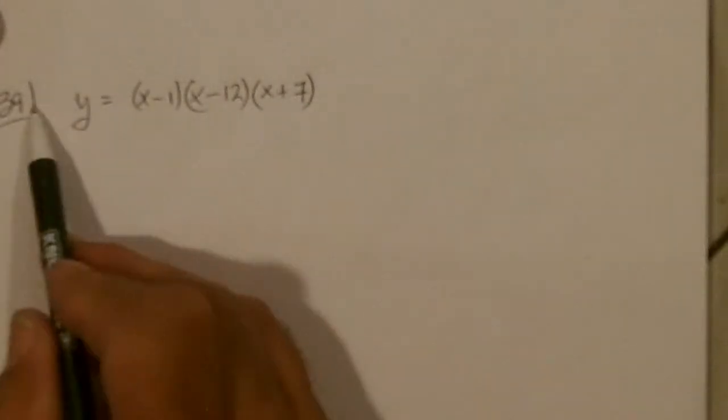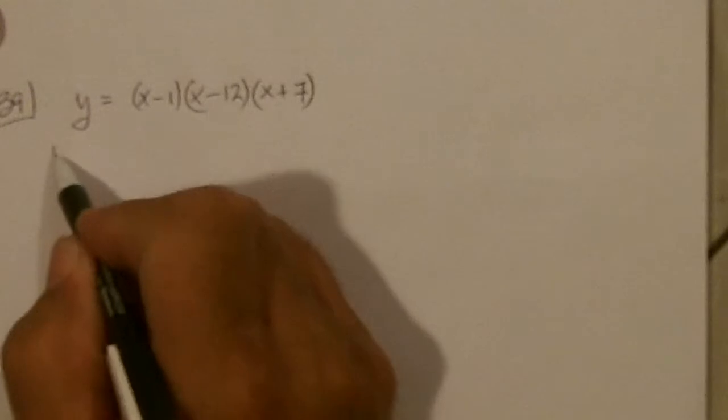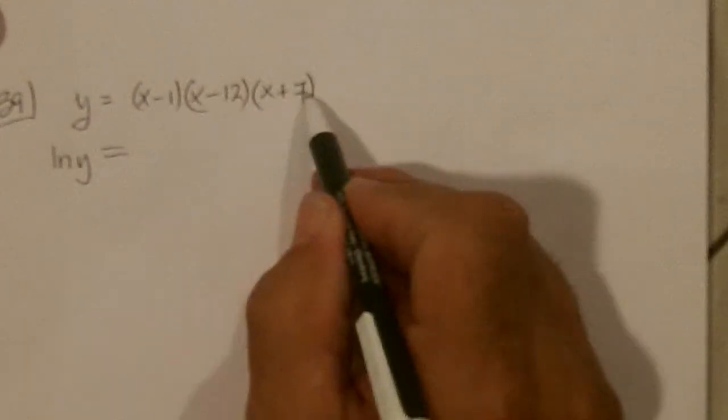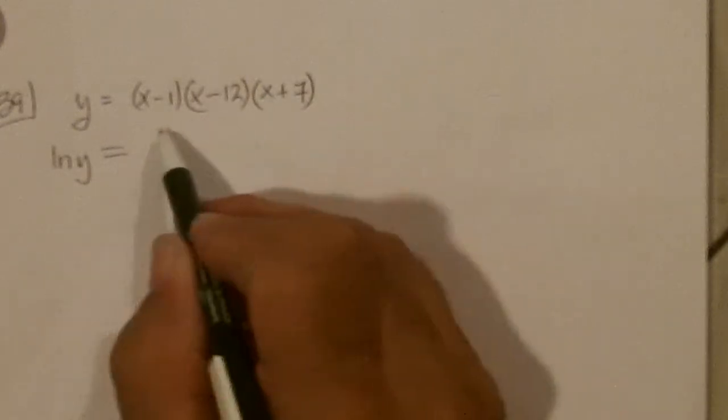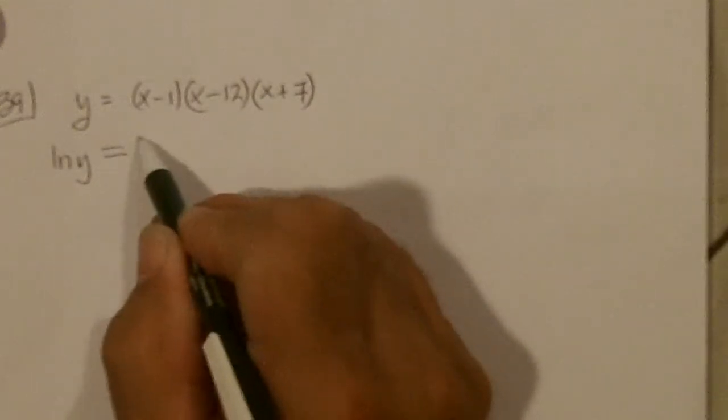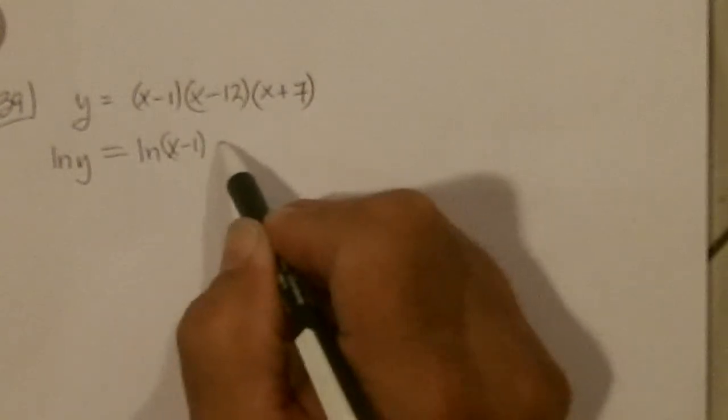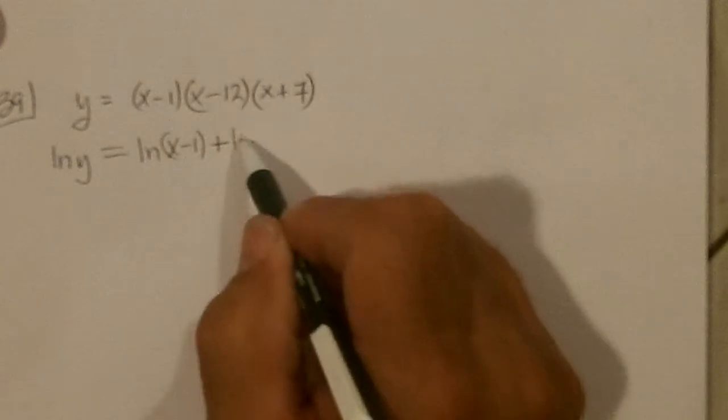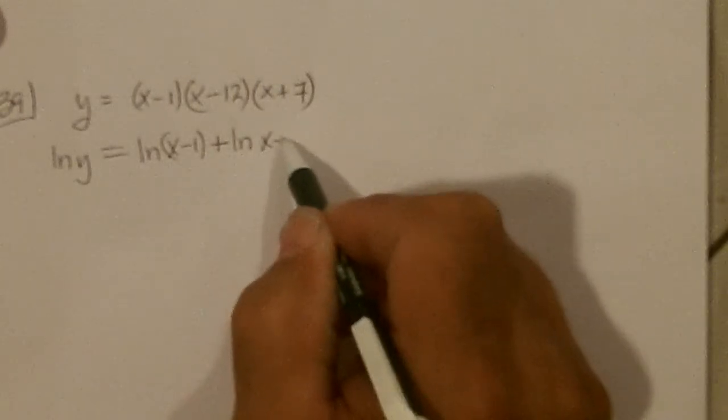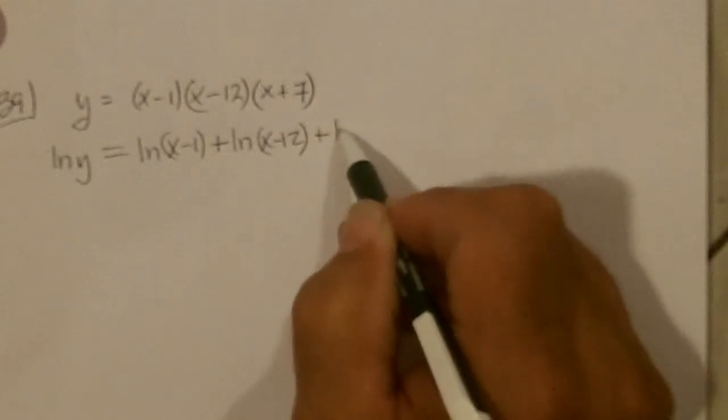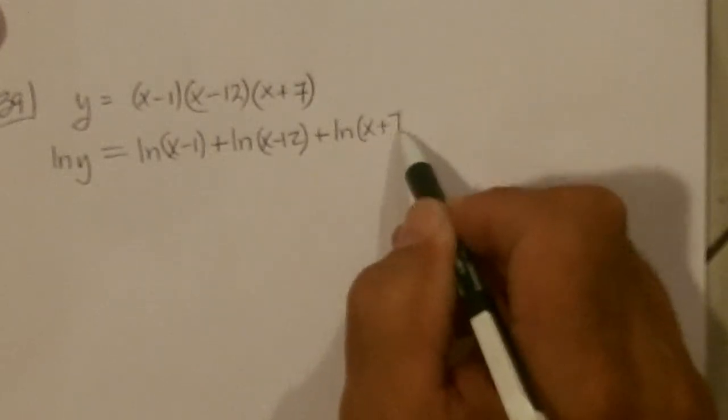It says use logs to find this one. So we'll take the log of both sides. And we'll have ln Y equals now if we have natural log of a product, that turns into the logs of the sum. So it's natural log of X minus 1. And it's multiplying, so we'd be adding the natural log of X minus 12 plus the natural log of X plus 7.